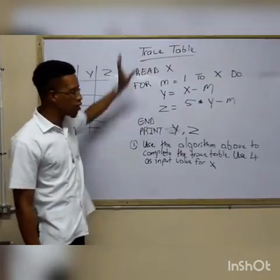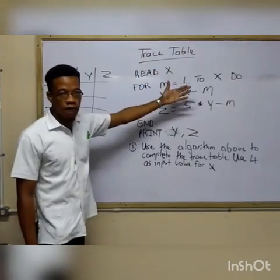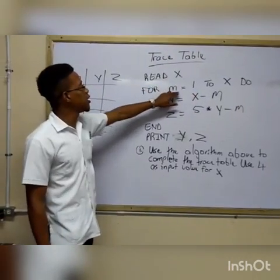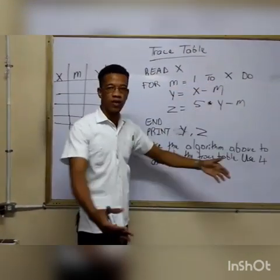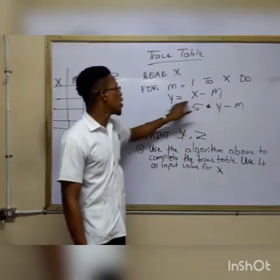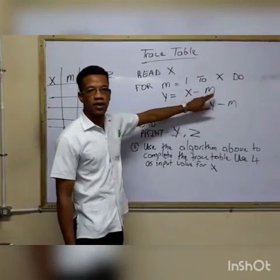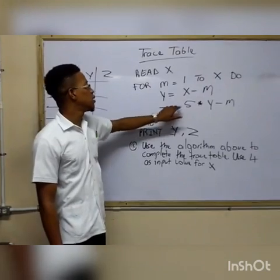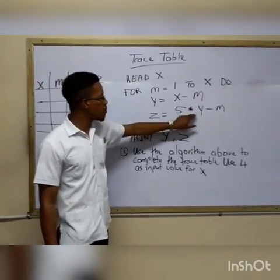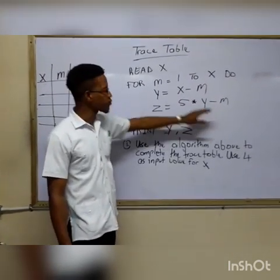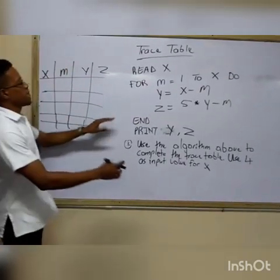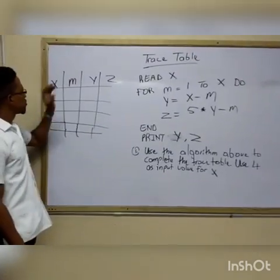Let's analyze this algorithm. So it is read x, which would be 4. For m equal 1 to x, which would be 1 to 4. y equal to x minus m. And z equal to 5 multiplied by y minus m. So let's complete the trace table.